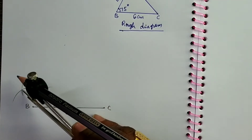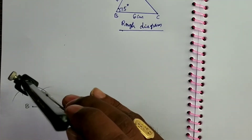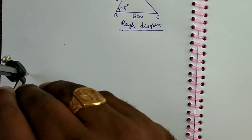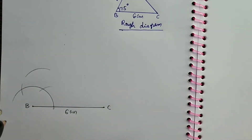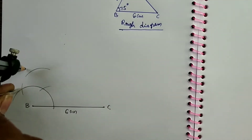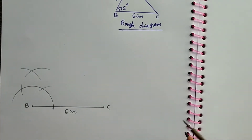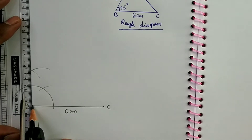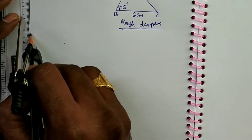This arc represents 120 degrees. Now construct 90 degrees. 90 degrees lies between 60 and 120, so from 60 degrees draw an arc, and from 120 degrees also draw an arc. Take B as center and through the point of intersection of these two arcs, draw a ray.